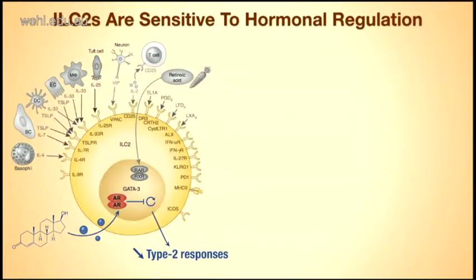I think we identify here another level of ILC regulation — hormonal regulation. Testosterone acts directly on the androgen receptor to inhibit ILC2 proliferation, and possibly also more directly their function, having a direct consequence by inhibiting the type 2 immune response.